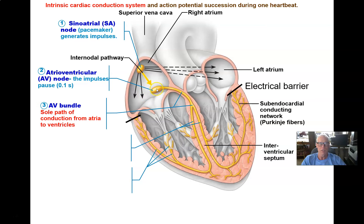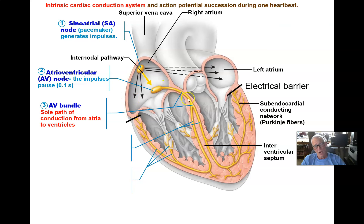Then the wave of depolarization spreads into the AV bundle. There's a slab of collagen around the four heart valves between the ventricles and the atria, and it turns out this also acts as an electrical insulator. So there are no electrical signals that can pass from the atria to the ventricles except through the AV bundle. The wave of depolarization cannot pass from the atria to the ventricles anywhere else — only through the AV bundle.